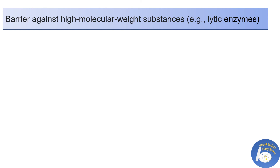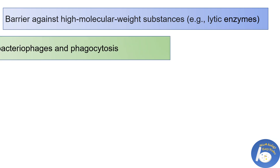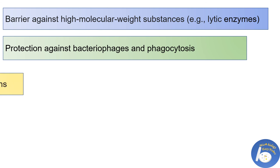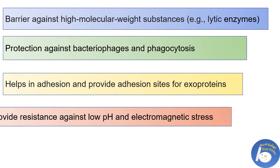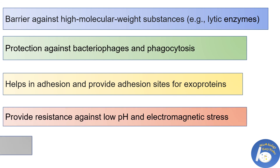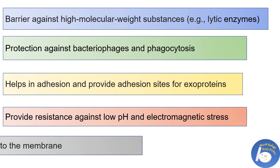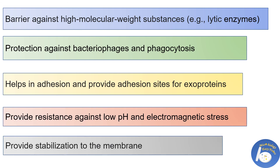Functions of the surface layer: it acts as a barrier against high molecular weight substances like lytic enzymes; it protects against bacteriophages and phagocytosis; it helps in adhesion and provides adhesion sites for exoproteins; it provides resistance against low pH and electromagnetic stress; and it provides stabilization to the membrane.